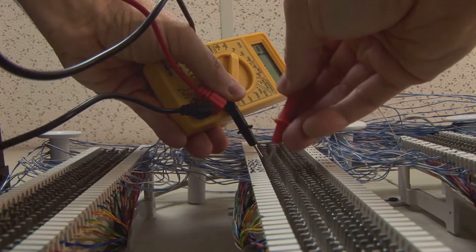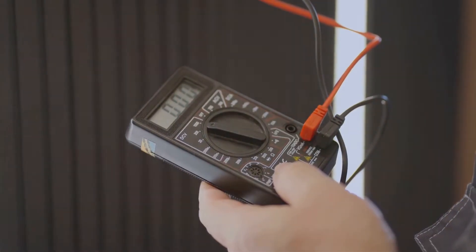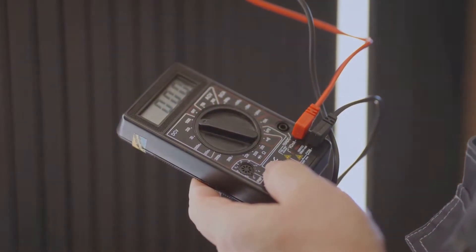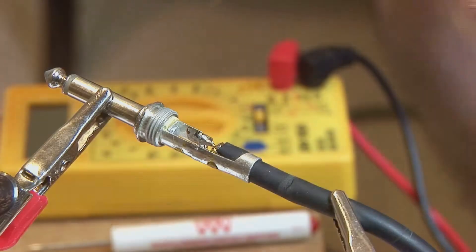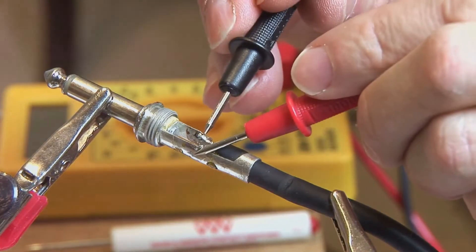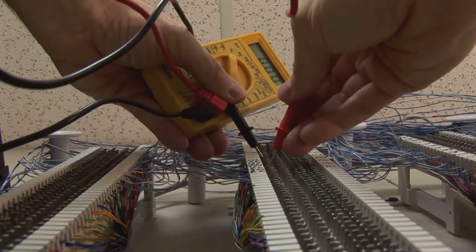Taking the coil's pulse: the resistance test. With the solenoid still disconnected from power, it's time to take its pulse - the electrical kind. First, locate the two terminals on your solenoid. These are the metal points where the wires connect.